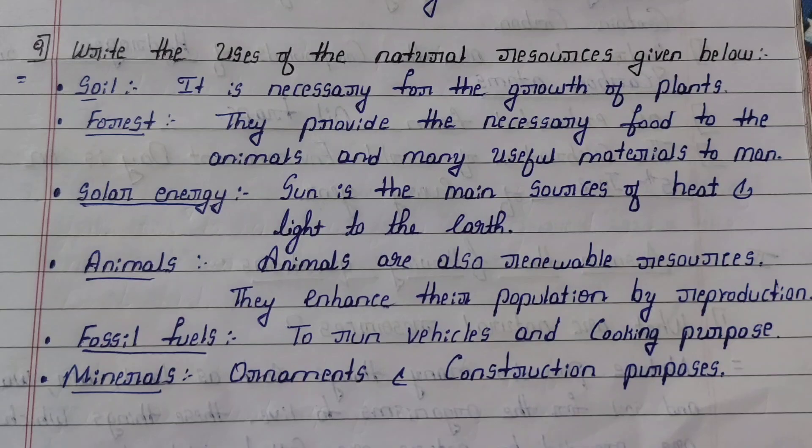Ninth question: What are the uses of the natural resources given below? Answer: First, soil — it is necessary for the growth of living organisms. Second, forest — provides food for animals and many useful materials to man. Third, solar energy — the sun is the main source of heat and light to the earth. Fourth, fossil fuels — used to run vehicles and for cooking purposes. Fifth, minerals — used for ornaments and construction purposes.